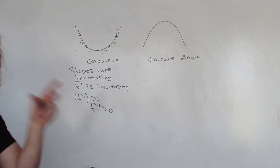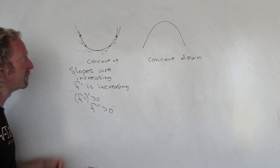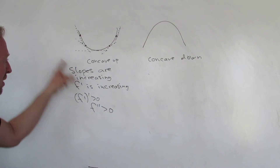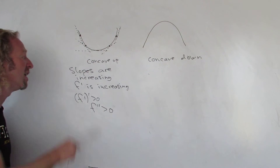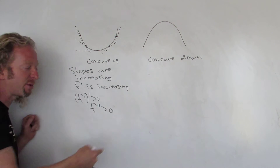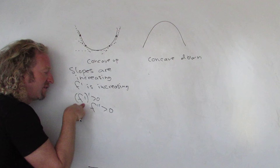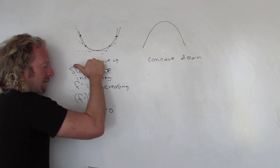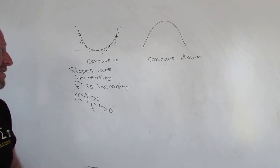So if you have a function that's concave up on an interval, the second derivative is positive. Let's do that again: slope is negative, zero, positive — so the slopes are increasing. The values of the slopes are the values of the first derivative, meaning the first derivative is increasing, so its derivative is positive. Therefore, the derivative of the derivative is positive. Concave up equals positive second derivative — really easy to memorize.